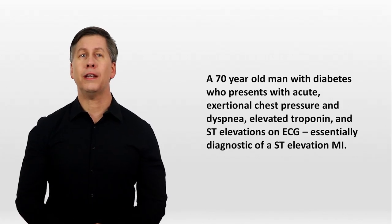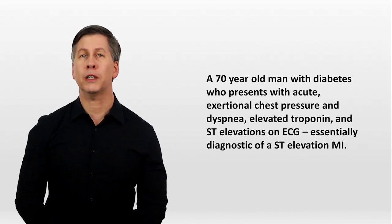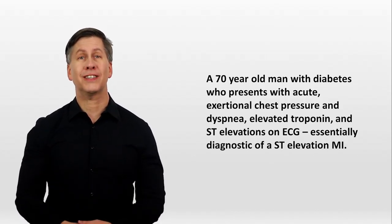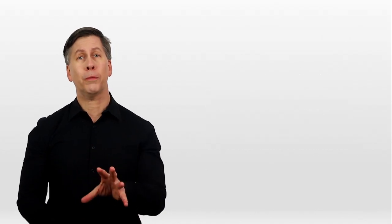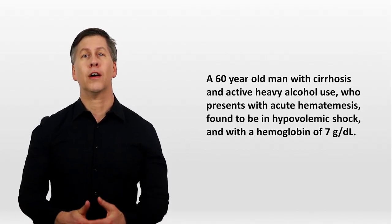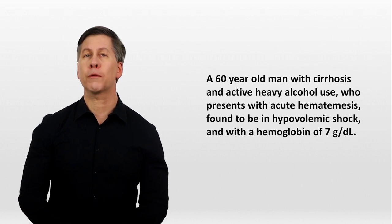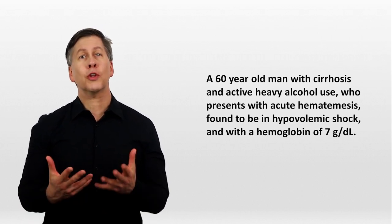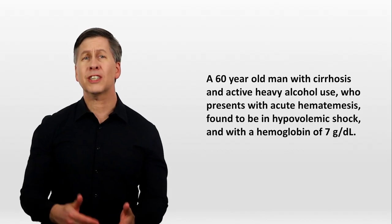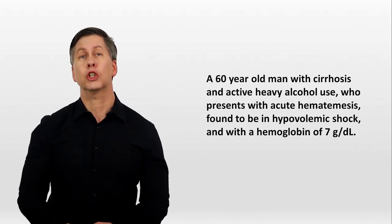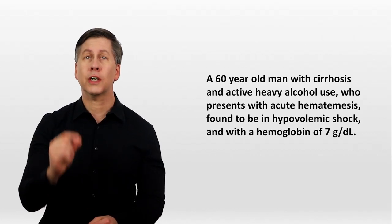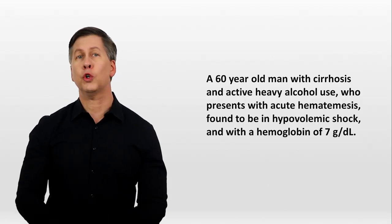A 70-year-old man with diabetes presenting with acute exertional chest pressure and dyspnea, elevated troponin, and ST elevations on ECG is essentially diagnostic of an ST elevation myocardial infarction. On the other hand, a 60-year-old man with cirrhosis and heavy alcohol use presenting with acute hematemesis in hypovolemic shock with a hemoglobin of 7 g/dL most likely has ruptured esophageal varices but could very easily have severe gastritis, a peptic ulcer, or a Mallory-Weiss tear combined with coagulopathy — so no specific diagnosis would be included in the summary statement, though diagnoses must be discussed in the broader differential.